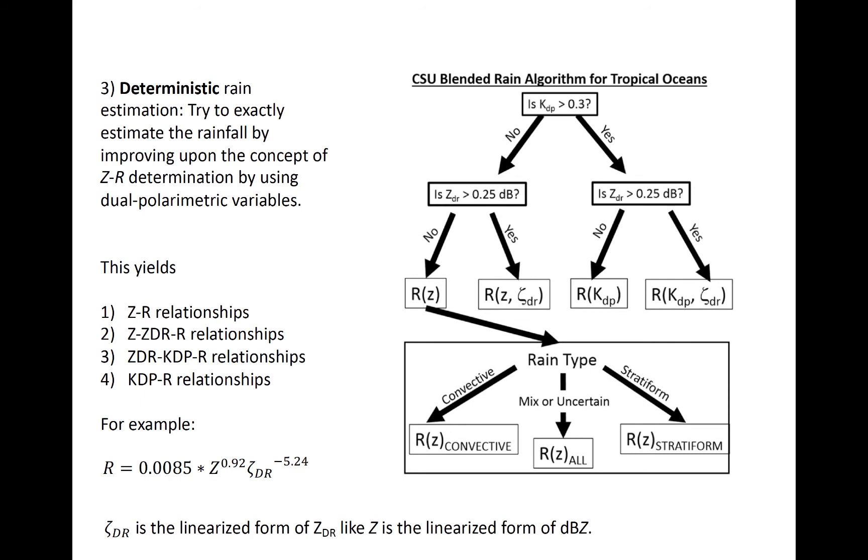For example, if you have a bunch of flat drops that have a large horizontal reflectivity component, but a small vertical one, then putting the ZDR in an equation like this would actually reduce the rain rate because the high ZDR is telling you that you actually have a smaller rain volume than the Z value alone would indicate.